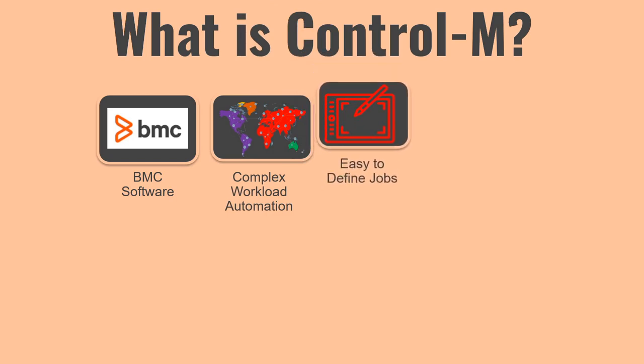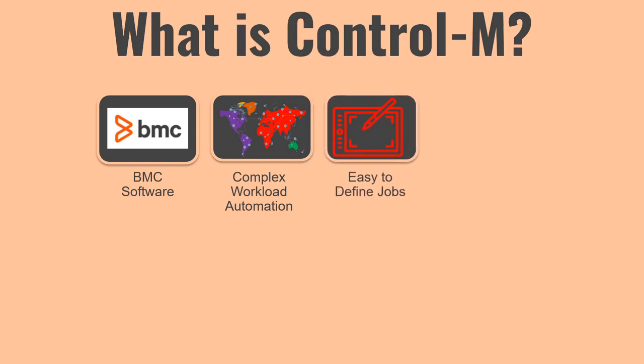Control M is very easy to use. You can very easily define all the jobs — it doesn't matter whether the job is going to run on SAP BO, a Windows machine, a UNIX machine, or a mainframe. The way to define a job is going to be almost the same, and you are still going to use the same interface to define all different types of jobs. The granular level detail may change on a case-to-case basis, but most of the scheduling mechanism remains the same.